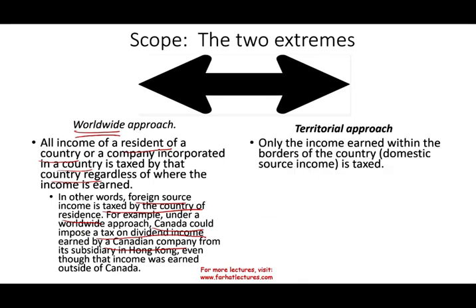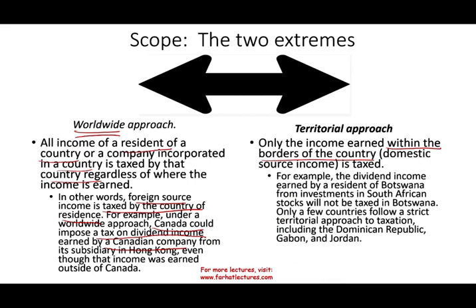The territorial approach is the other extreme — only the income earned within the borders of that country is taxed. If you operate within our borders, we tax you; otherwise, we do not. For example, dividend income earned by a resident of Botswana from investments in South African stock will not be taxed in Botswana. Only a few countries follow a strict territorial approach — examples include the Dominican Republic, Gabon, Jordan, and Hong Kong.